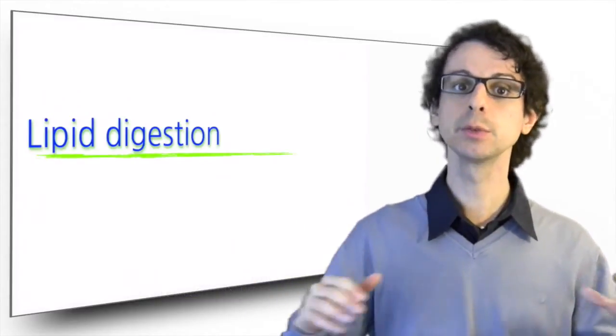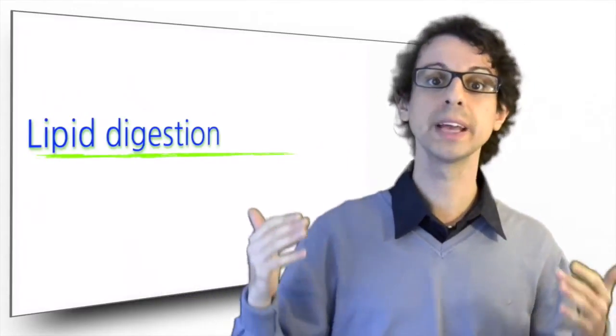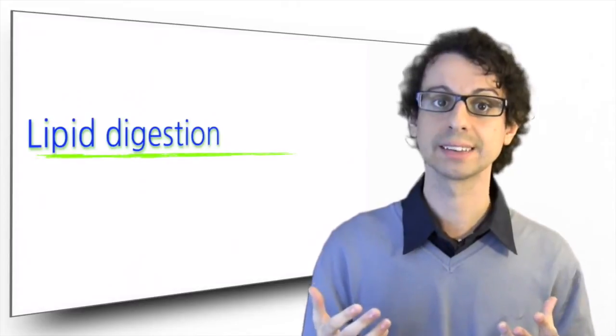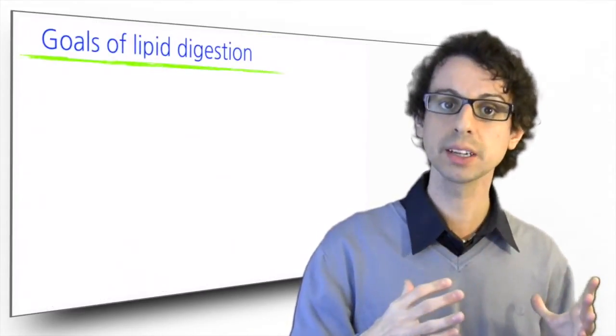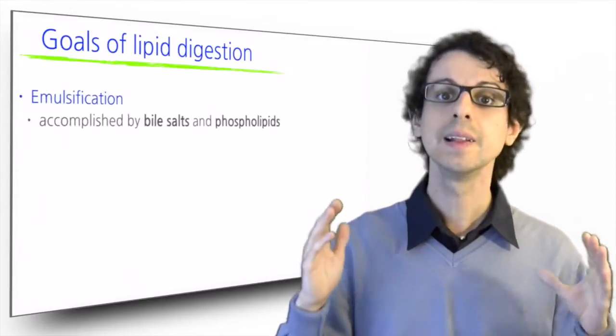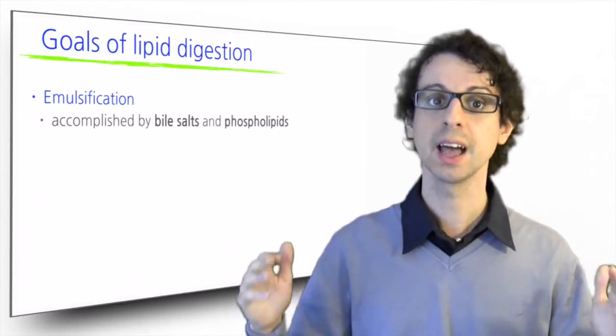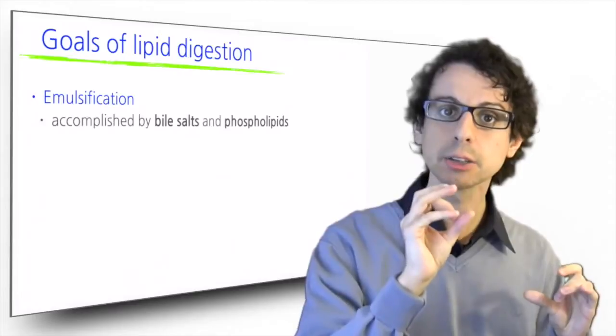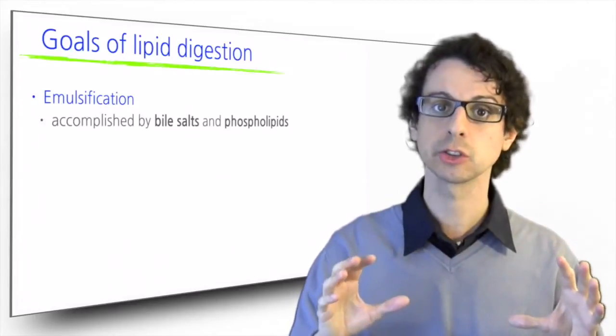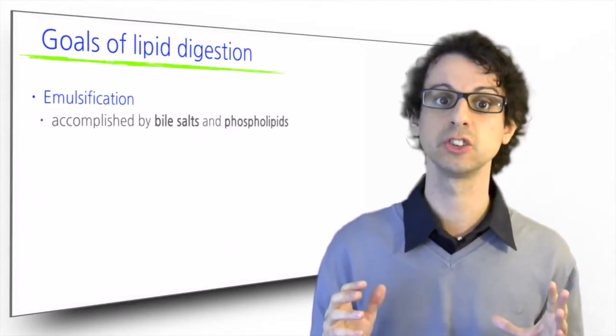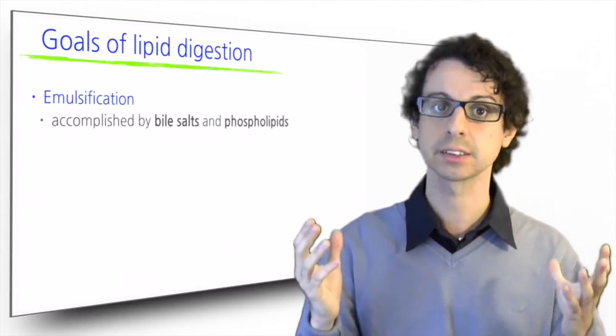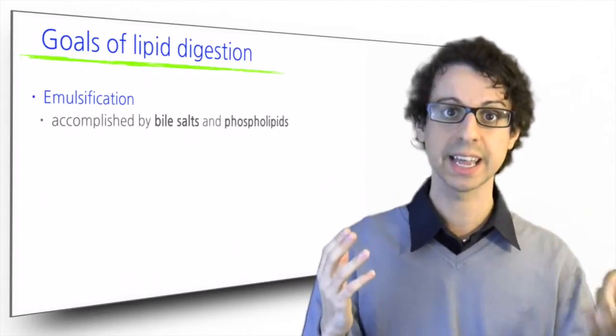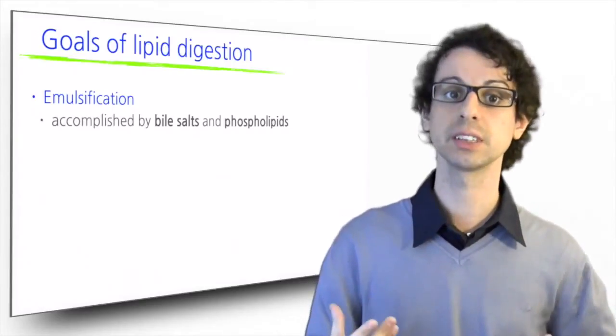By themselves, lipids would float on top and not be accessible to the digestive enzymes on the bottom. For this reason, before they can be efficiently broken down by our digestive enzymes, lipids have to be emulsified, that is, turned into tiny little droplets that are kept in suspension in the watery environment of the GI tract. This largely increases the surface areas of the interface between fats and aqueous environment where the digestive enzymes are.